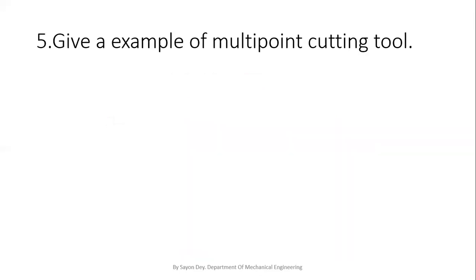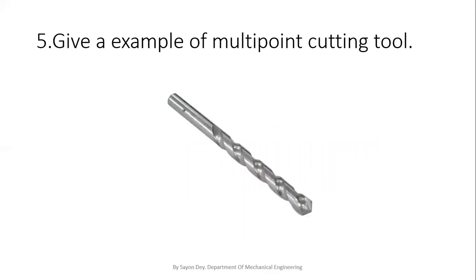The next question is: give an example of a multipoint cutting tool. The twist drill is one example of a multipoint cutting tool. There are two types of cutting tools: single-point cutting tool and multipoint cutting tool, divided according to their cutting edges. In a multipoint cutting tool, there are a number of cutting edges, whereas in a single-point cutting tool, there is only one edge for cutting. One example of a single-point cutting tool is the cutting tool used in a lathe.